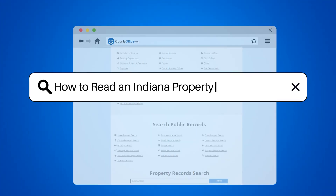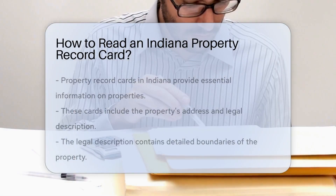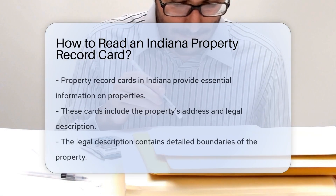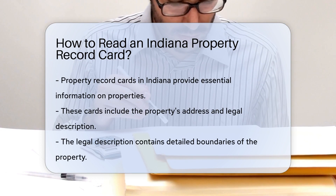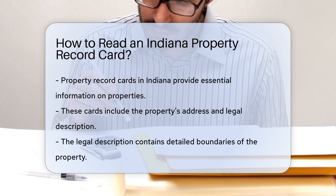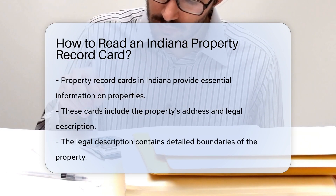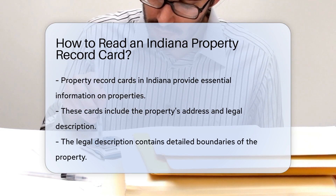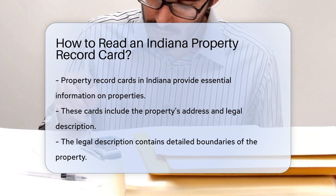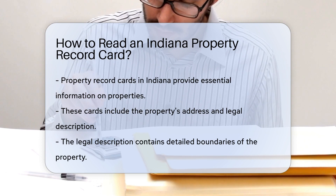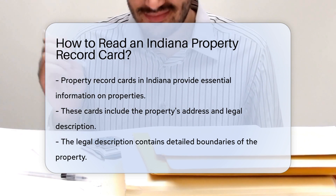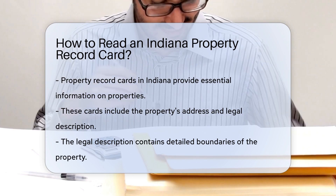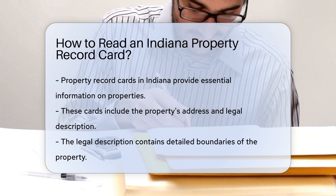How to Read an Indiana Property Record Card. Property record cards in Indiana contain vital information about a property's characteristics and ownership history. These cards typically include details such as the property's address, legal description, land size, building details, assessed value, and tax information.